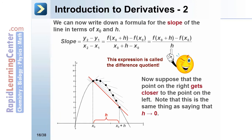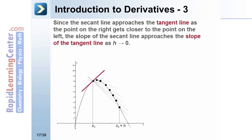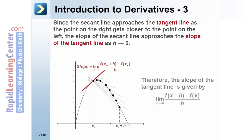Now suppose the point on the right gets closer to the point on the left — this is the same as saying h is approaching 0. Since the secant line approaches the tangent line as the right point moves closer and closer to the left point, the slope of the secant line approaches the slope of the tangent line as h approaches 0.